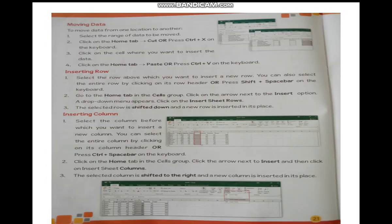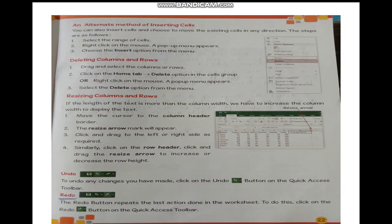I will show you. Then moving the data and how you can insert a row and how you can insert a column. When you are preparing a table and you have finished it and forgot to type something, you can insert a column or insert a row between the table. Then an alternate method of inserting a cell — there are two to three methods of how you can insert a row and column.